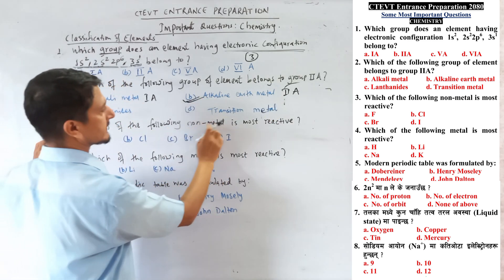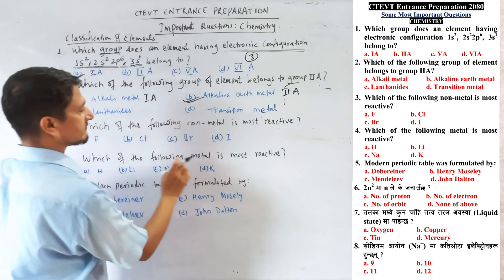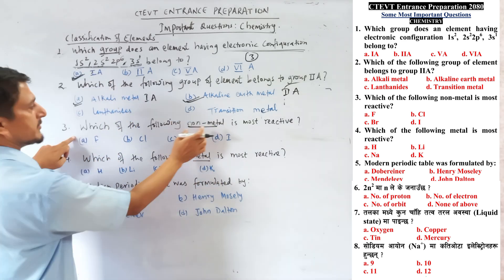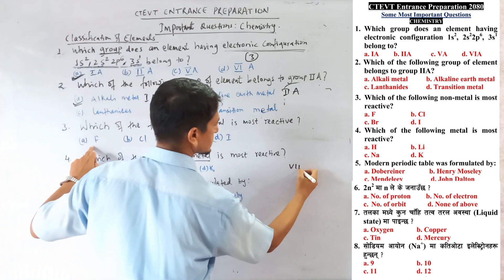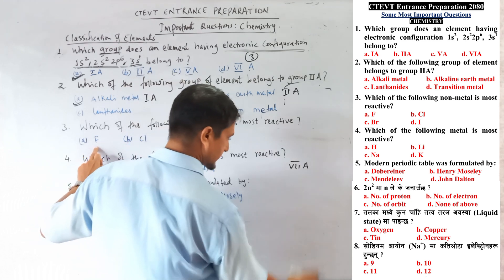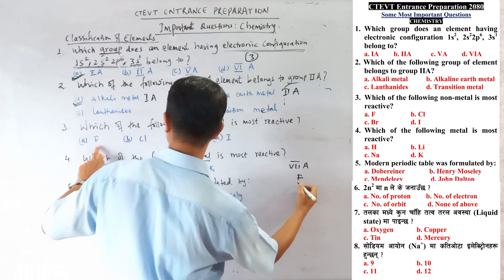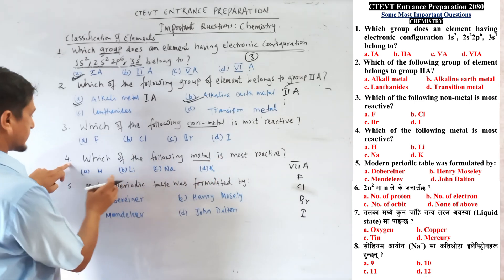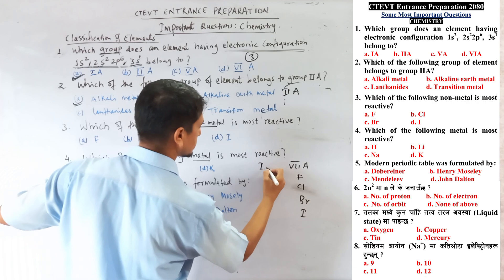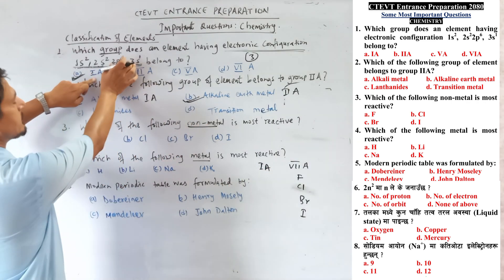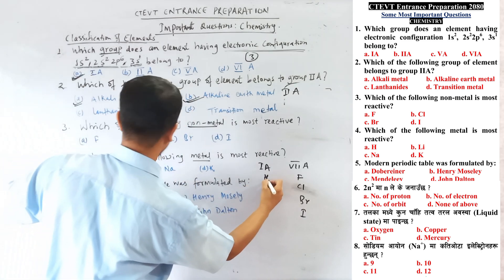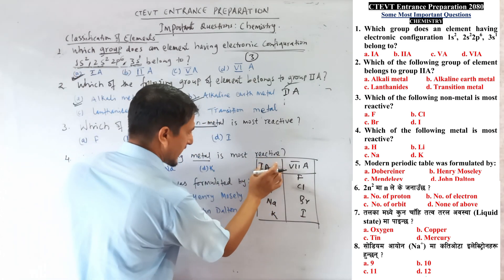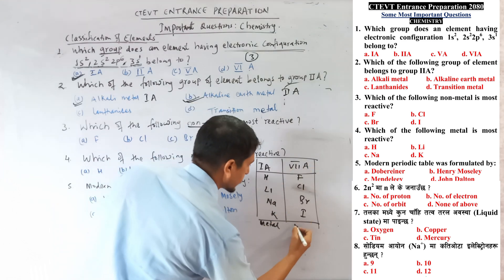Question number 3: Which of the following non-metals is most reactive? Question number 4: Which of the following metals is most reactive? Group 7A contains fluorine, bromine, and iodine. Group 1A — which is metal — contains lithium, sodium, and potassium. 7A is non-metal, 1A is metal.